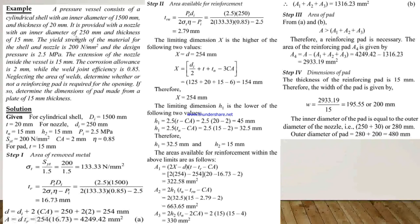It is provided with a nozzle with an inner diameter of 250 mm and a thickness of 15 mm. The yield strength of the material for the shell and nozzle is 200 N/mm². The design pressure is 2.5 MPa. The extension of the nozzle inside the vessel is 15 mm and the corrosion allowance is 12 mm, weld joint efficiency is 0.85, neglecting the area of welds. Determine whether a reinforced pad is required, and if so, determine the dimensions of the pad made from a plate of 15 mm thickness.